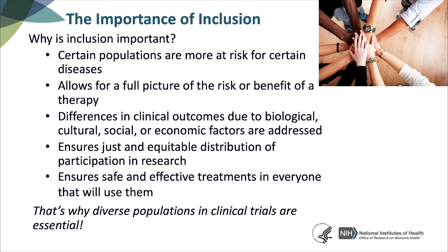So why is inclusion important? Certain populations may be more at risk for certain diseases, such as diabetes and heart disease, and so it's important for patients in those populations to be included in a trial studying that disease. It allows for a full picture of the risk and benefit of treatments being tested in clinical studies, because there are important differences in how people of diverse groups respond to a treatment. By using one demographic group and generalizing findings across all populations, differences between various groups are not accounted for.